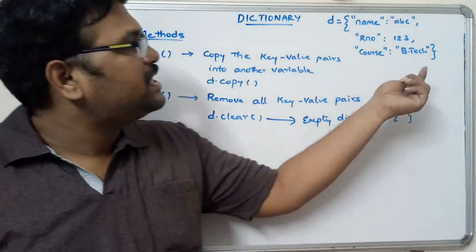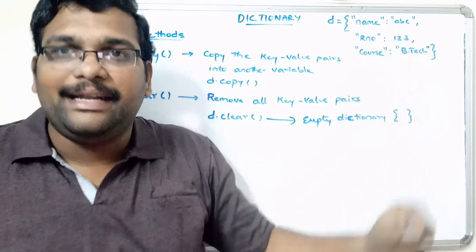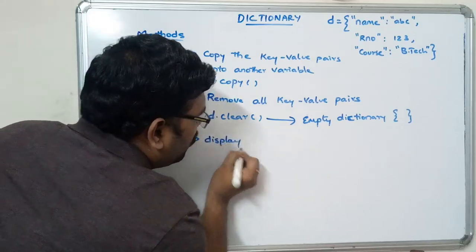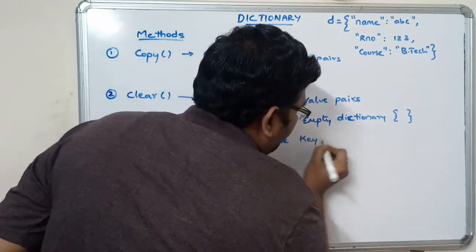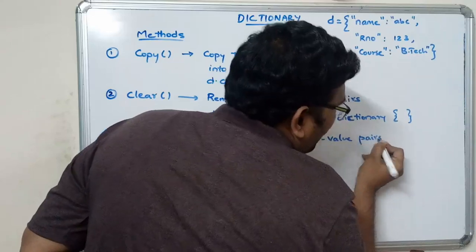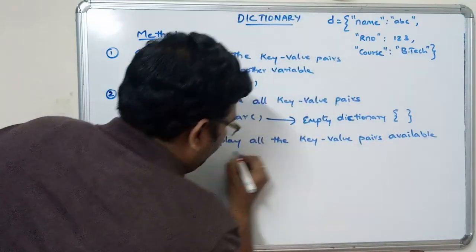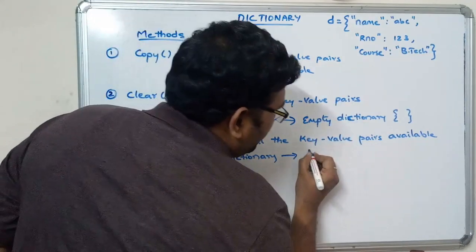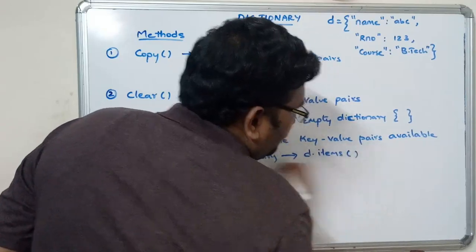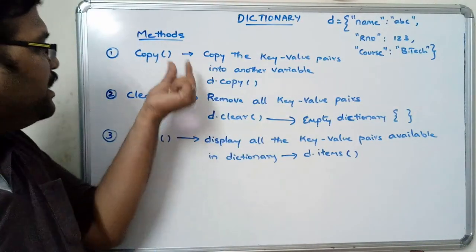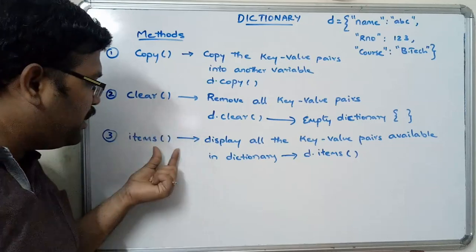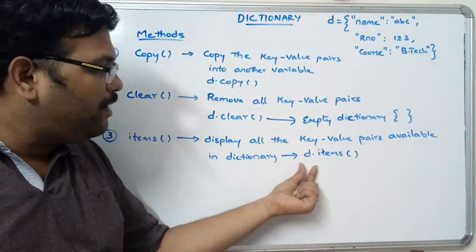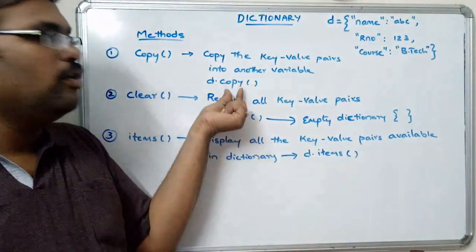The items method — we just saw that key-value pairs are called items in the dictionary. So d.items() will display all the key-value pairs available in the dictionary. The syntax is d.items(). We are not taking any argument here — zero arguments. We call these functions with the dictionary name: d.items(), d.clear(), d.copy() — similarly.